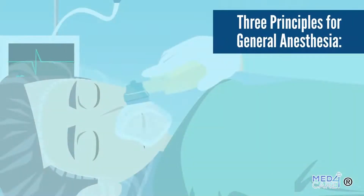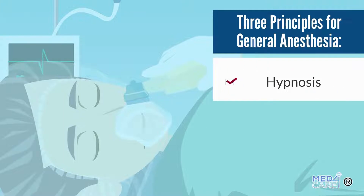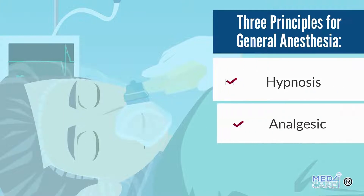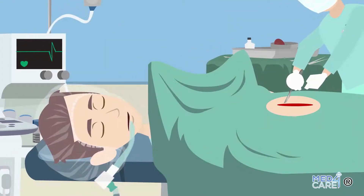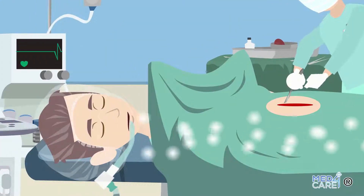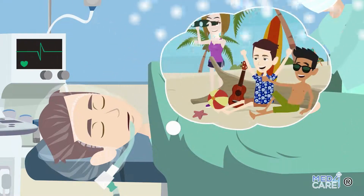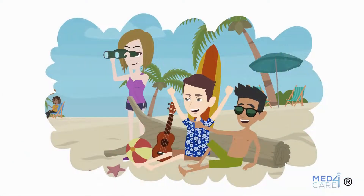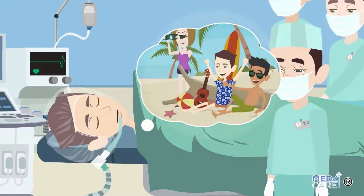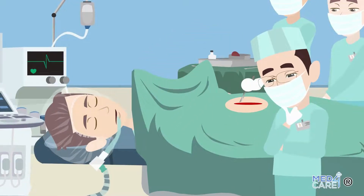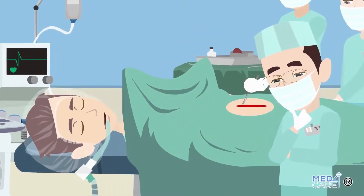There are three principles for General Anesthesia: Hypnosis, Analgesia, and Neuromuscular Blocking. Sleep induced by general anesthesia is generally profound — it is an artificial sleep with different modes than common sleep.